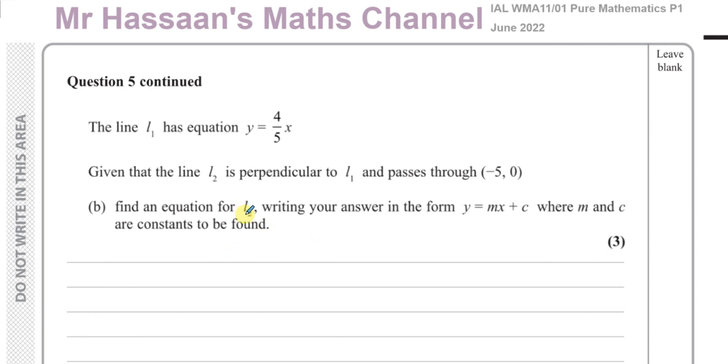So line L2 obviously is a straight line graph, just like line L1, and line L2 is perpendicular to line L1. So we can say that the gradient of line L2 is equal to the negative reciprocal of the gradient of line L1. And the gradient of line L1, we can see from here, is 4 fifths. So the gradient of line L2 is the negative reciprocal, which is negative 5 over 4.